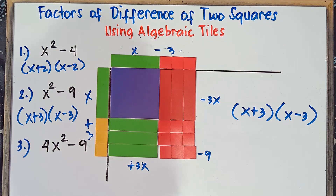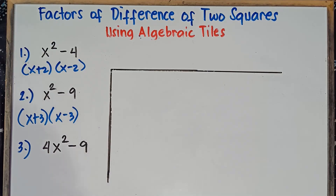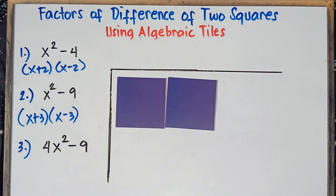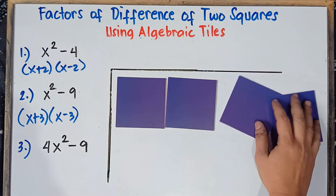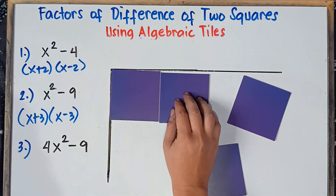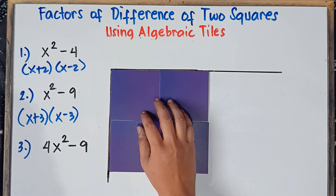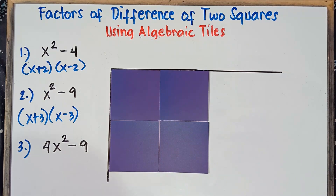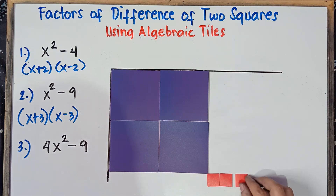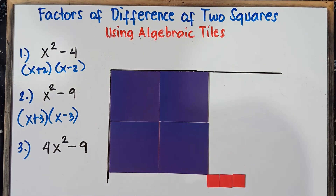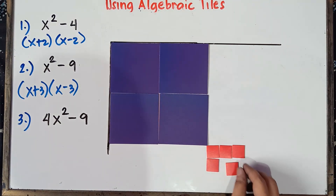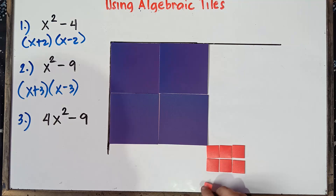Let's proceed now to the last example — example number 3. Our given: we have 4x squared minus 9. So we have 4 x squared tiles: 1x squared, 2x squared, 3x squared, 4x squared. We can group these 2 by 2. And then we have negative 9 red tiles, which we can group by 3: 1, 2, 3... rearranging to fit, giving us 3 groups of 3.